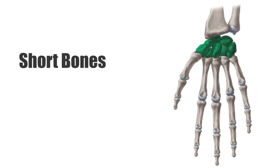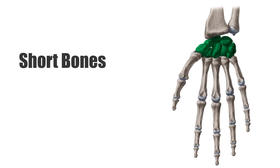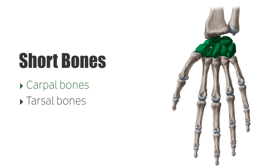Next are the short bones, which consist of a thin external layer of compact bone covering a vast spongy bone and marrow, making a shape that is more or less cuboid. The carpal and tarsal bones fall into this category.